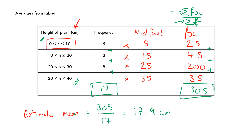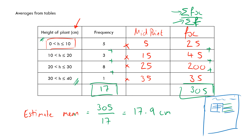One final exam tip: if a question gives you a frequency table with only a couple of columns and the table isn't centred on the page, it's often leaving space for you to add the extra columns you need — like the midpoint and fx columns. That's a useful thing to know. I hope this has been really useful — good luck with your exams, and thank you for watching.